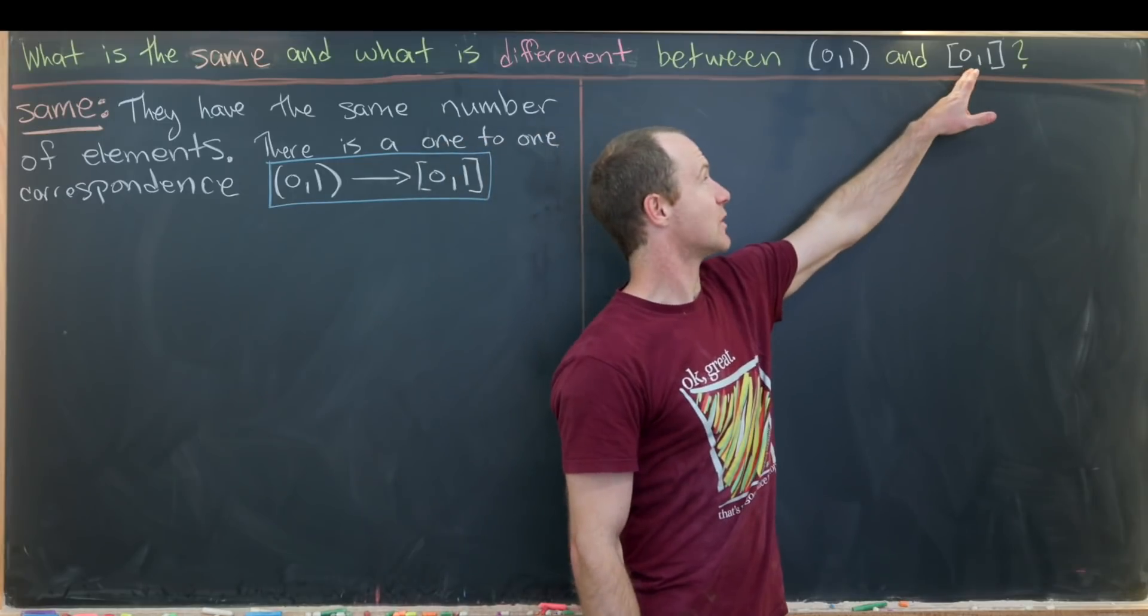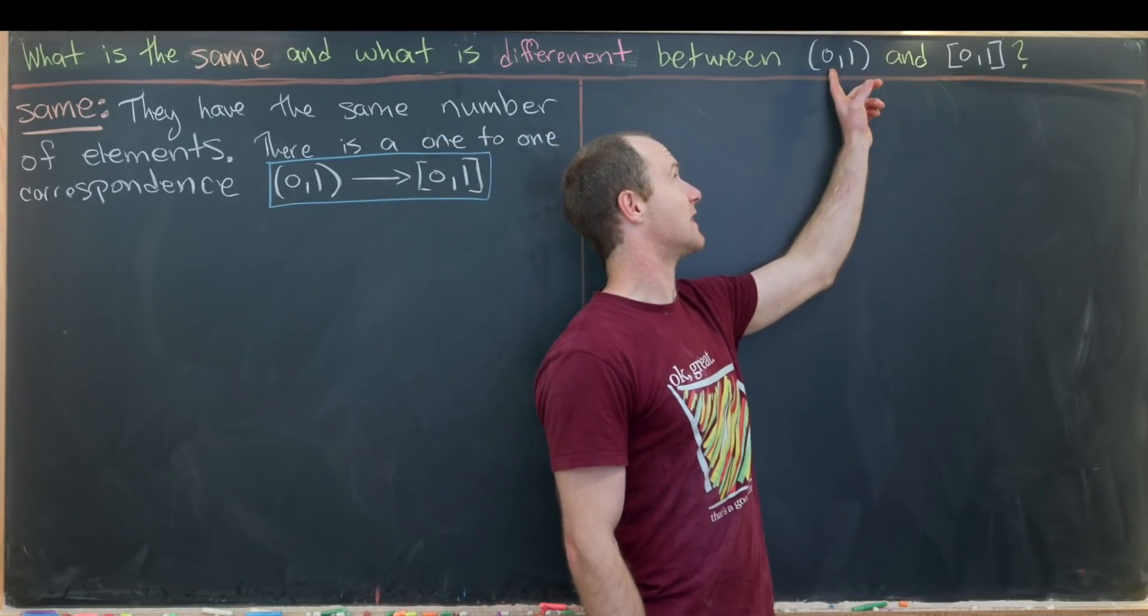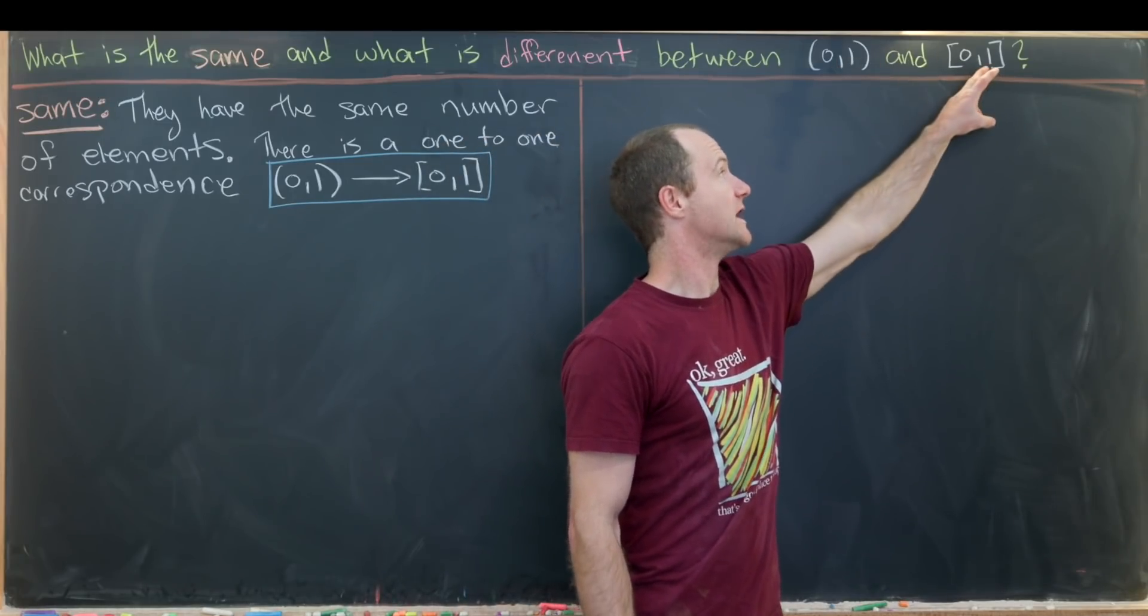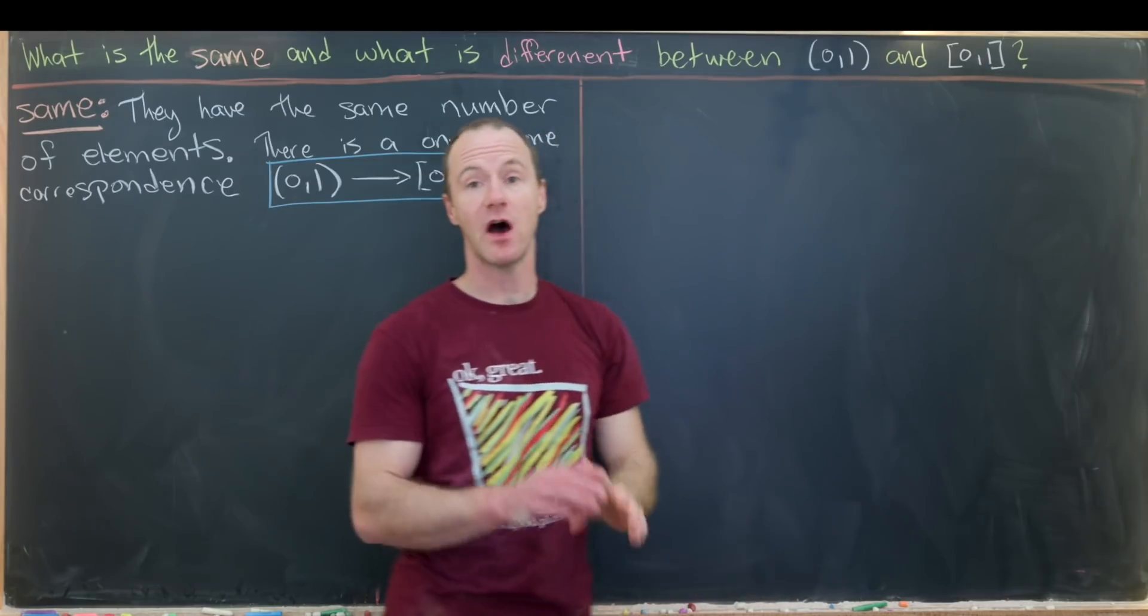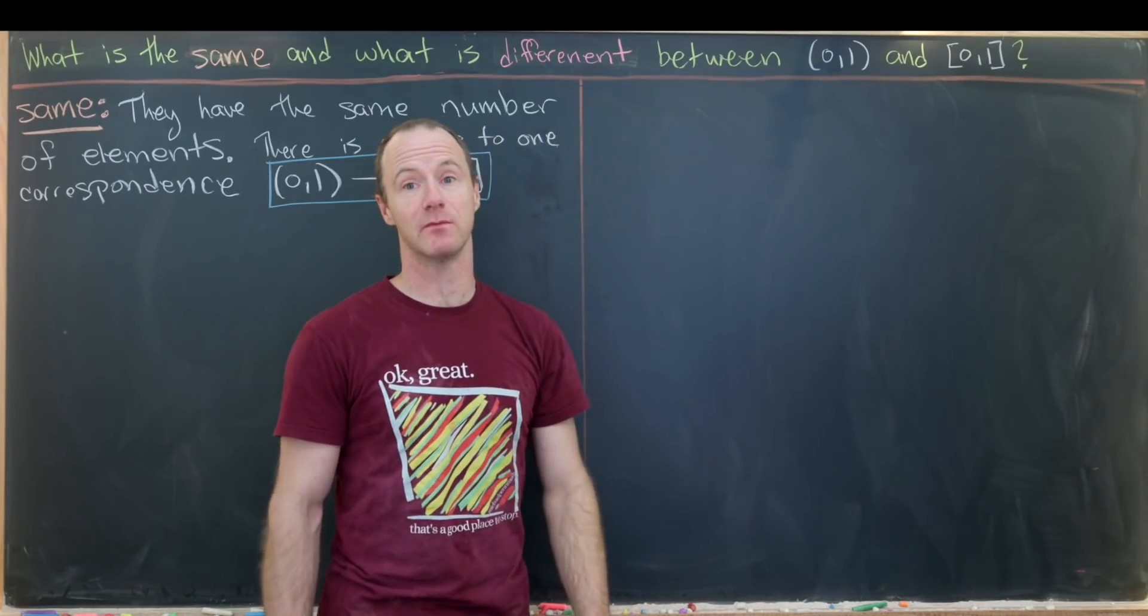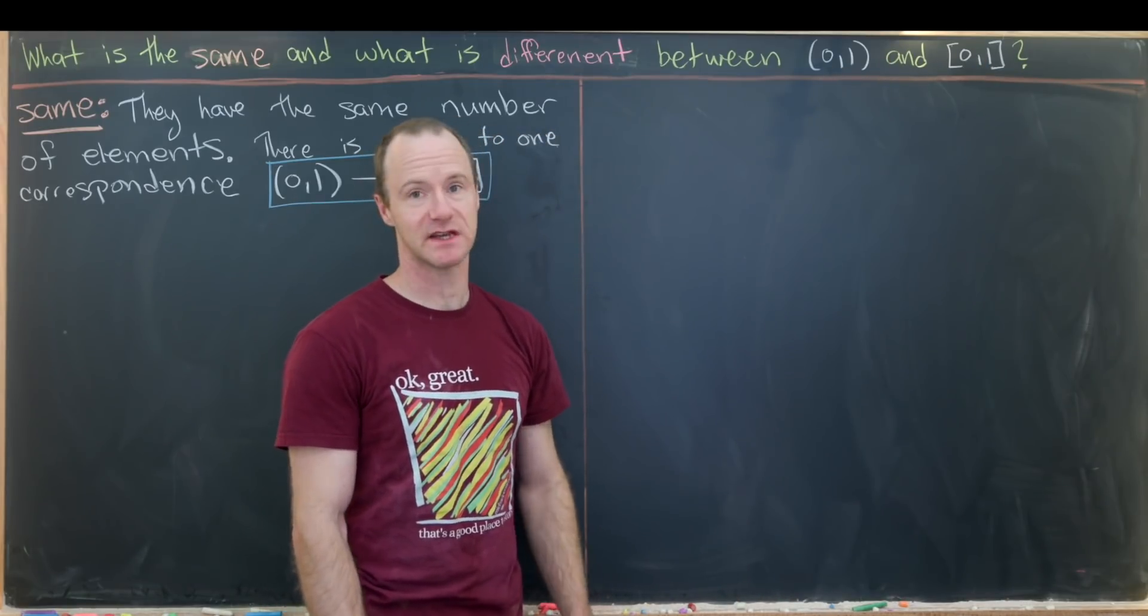So that means 0 is an element of this set, but not this set. 1 is an element of this set, but not this set. But other than that, they have the same number or they have the same elements, I should say.